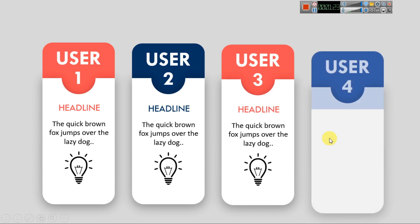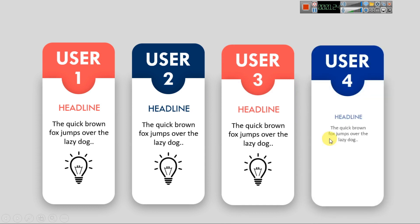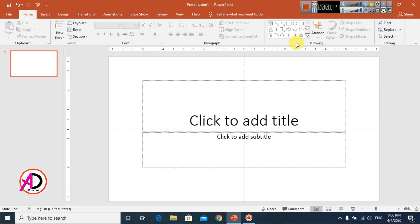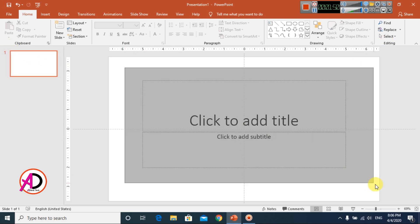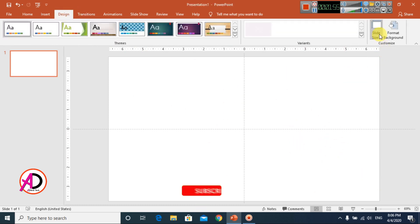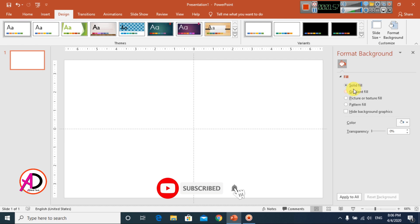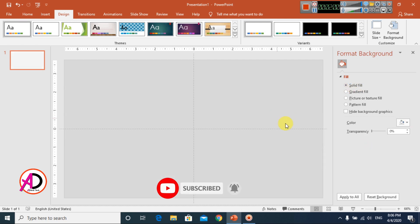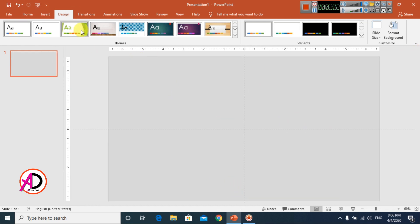First of all, open your PowerPoint. I open my PowerPoint, then I select all and press delete. Then I go to Design, click Format Background, and choose a gray color. When I close it, I go to Insert.